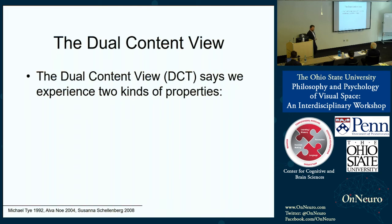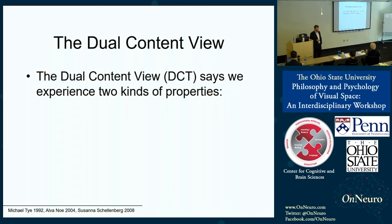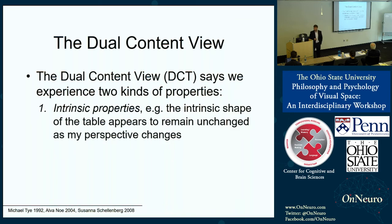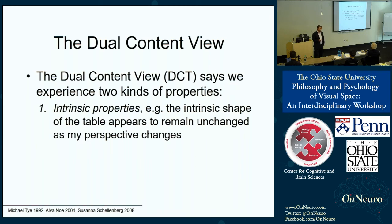The most popular solution in the current literature is the dual content view, defended by Michael Tye, Alvin Noë, and Susanna Schellenberg, among others. The view says we experience two kinds of properties. On the one hand, there are intrinsic properties — for example, the intrinsic shape of the table, which appears to remain unchanged as your perspective changes. Then there are perspectival properties — for example, the perspectival shape of the table, which appears to change as your perspective changes.